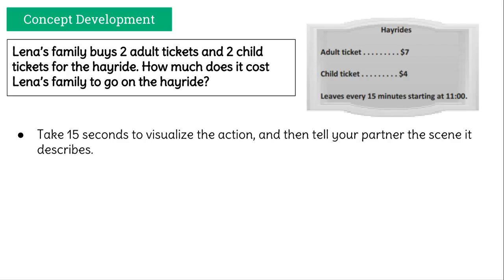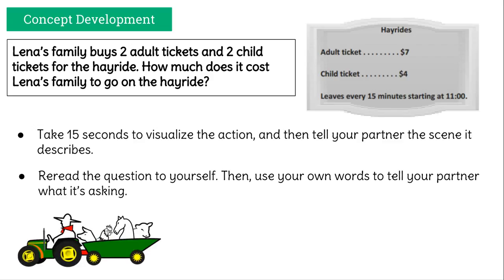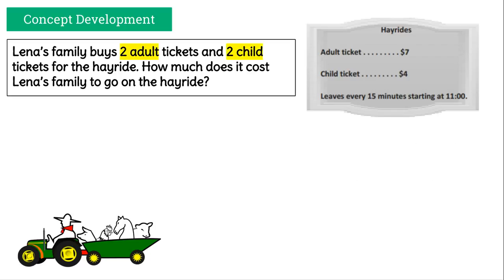When I picture this in my head, I'm picturing Lena's family walking up to the counter and looking at the sign here, buying two tickets for adults and then two tickets for kids. So I want you to reread the question to yourself now and use your own words to tell your partner what it's asking. One thing I noticed it's asking about is two adult tickets and two child tickets, and I'm probably going to need to know the total of all of this.